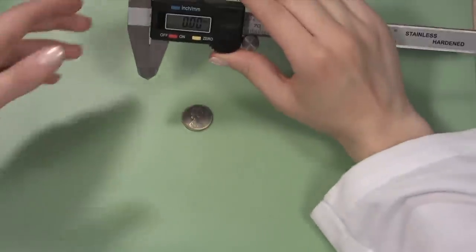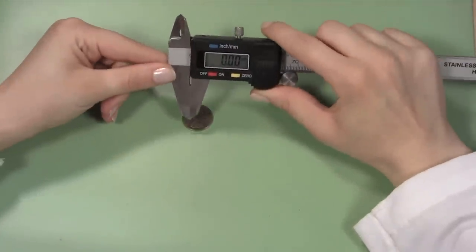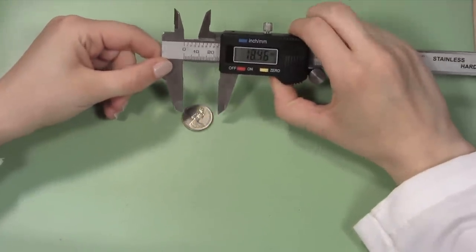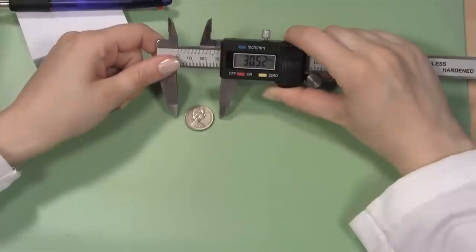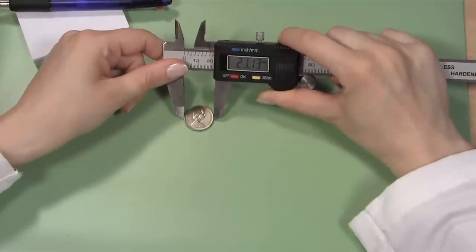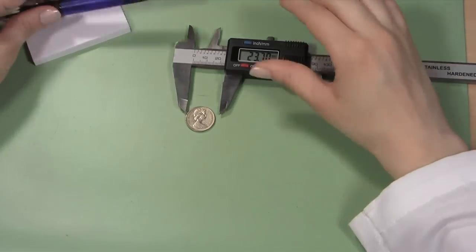You will use your digital gauge to first measure the diameter of your coin. Set your gauge to millimeters and holding it over the coin, open the jaws of the gauge wider than the coin. Close the jaws of your gauge until they grip either side of the coin, as close to the diameter as you can get. Record the measurement.